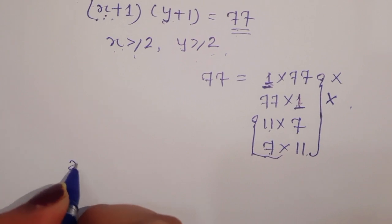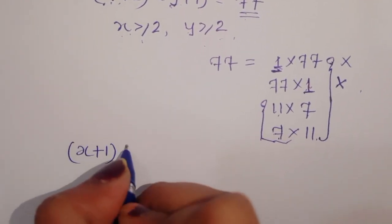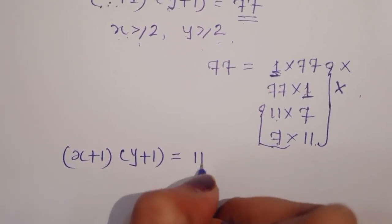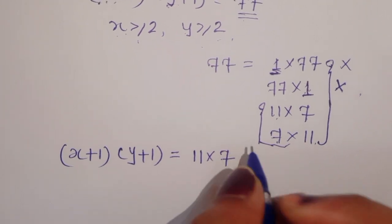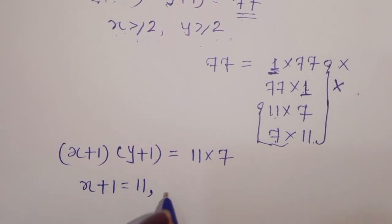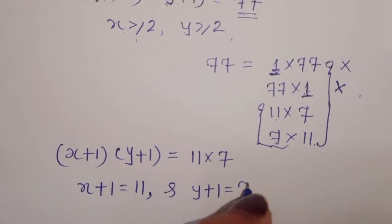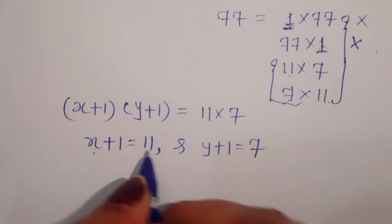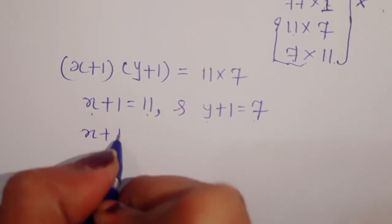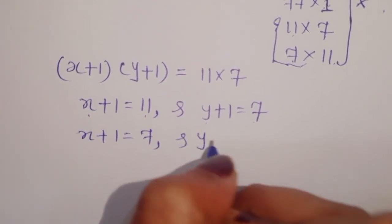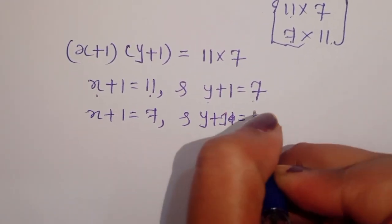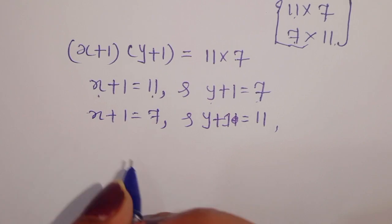We are left with two valid conditions: 11 × 7 and 7 × 11. In the first case, (x plus 1) equals 11 and (y plus 1) equals 7. In the second case, (x plus 1) equals 7 and (y plus 1) equals 11. In both cases, x and y are greater than or equal to 2, satisfying the given conditions.